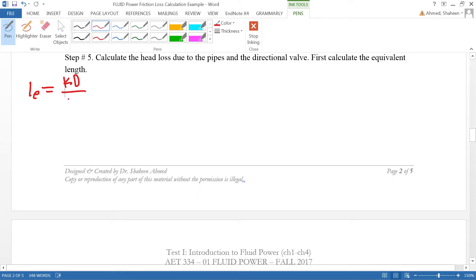The equivalent loss in a straight pipe in comparison to that fitting or valve. In this case we have a four-way directional valve with K value of 4, diameter of 3 inches, and friction value from the Moody diagram of 0.022.